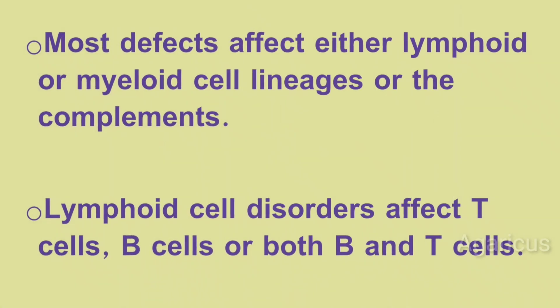Most defects affect either lymphoid or myeloid cell lineage, or the complement system. The lymphoid cell lineage includes white blood cells, and the myeloid cell lineage includes granulocytes.